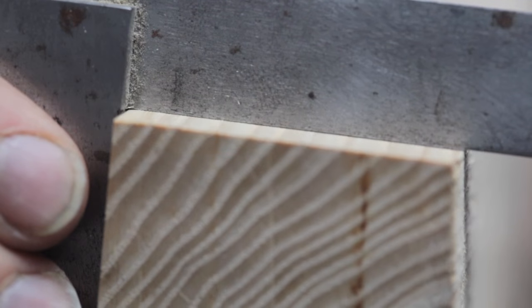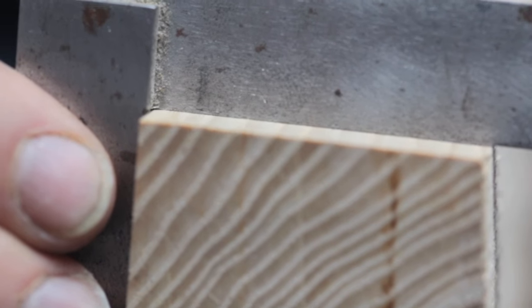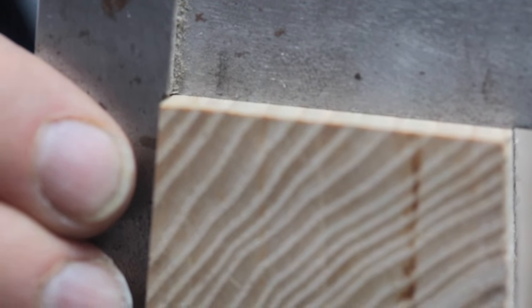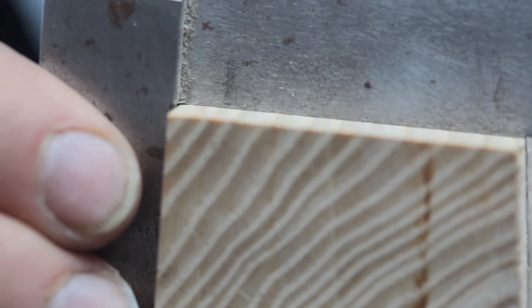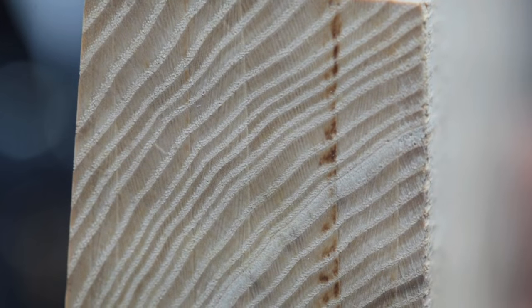So as you can see we're in good shape. We've got an edge that's square to a face. Everything's flat and straight and we've completed two of our four steps in milling this piece of wood.